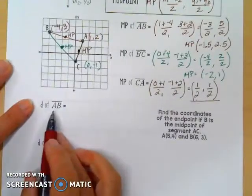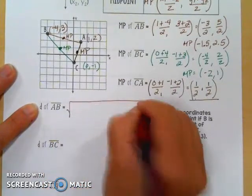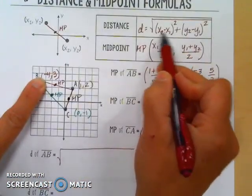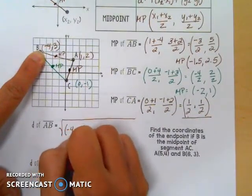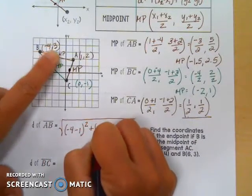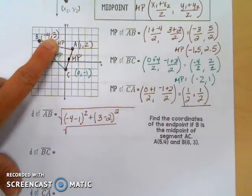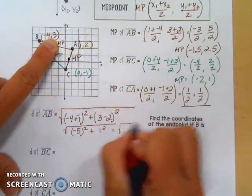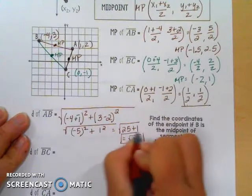Let's try distance. We want to find the distance of AB — how long is it between A and B? The distance formula requires us to take the square root. We take our x values and subtract them. It doesn't technically matter which is x2 or x1, you just have to be consistent. Starting with B: the square root of (negative 4 minus 1) squared plus (3 minus 2) squared. Negative 4 minus 1 is the same as negative 4 plus negative 1, which is negative 5 squared, and 3 minus 2 is 1 squared. Negative 5 squared is 25, 1 squared is 1, so the distance is the square root of 26.